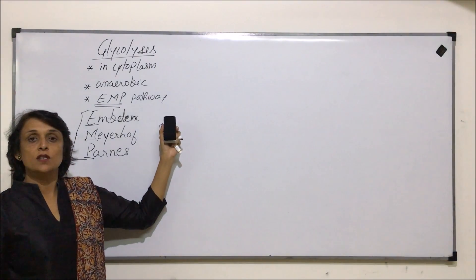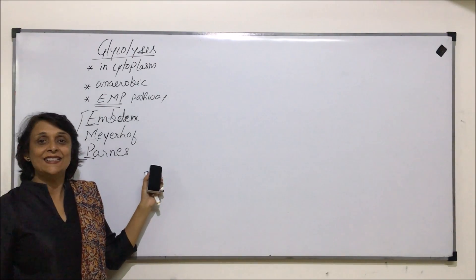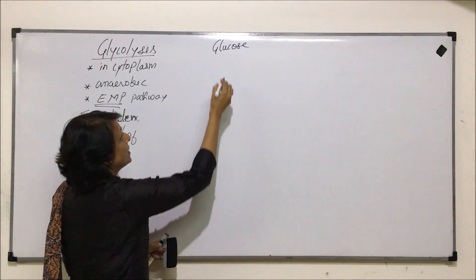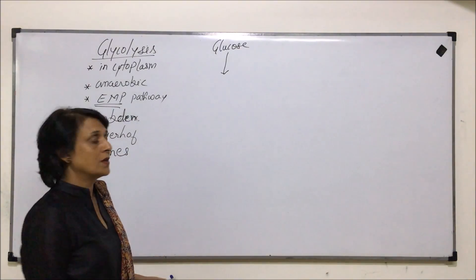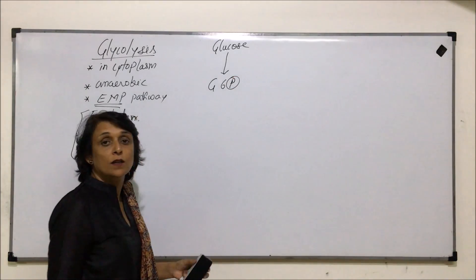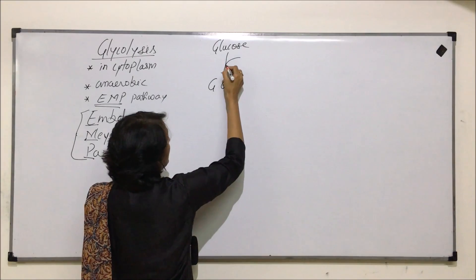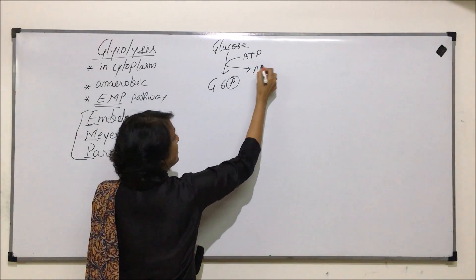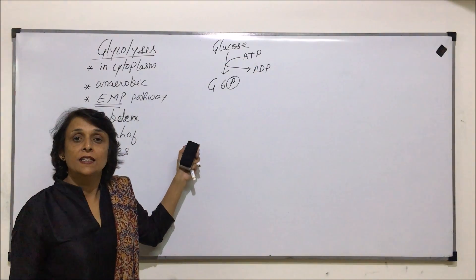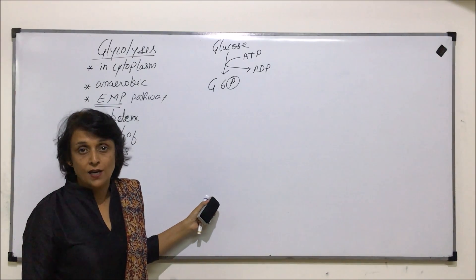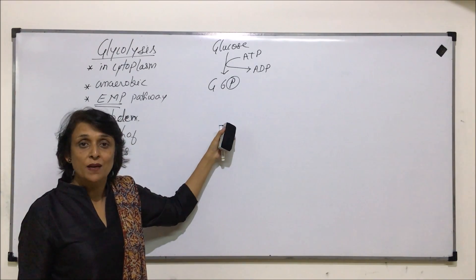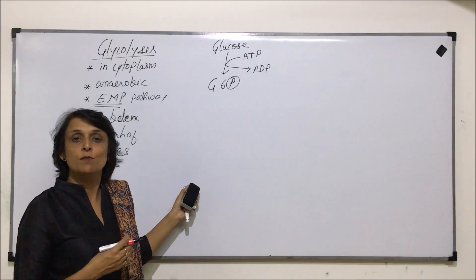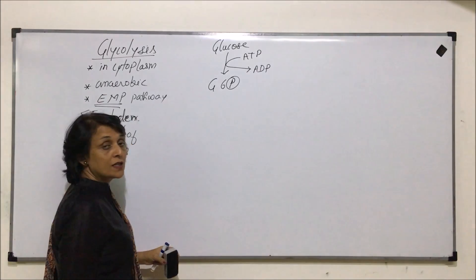In glycolysis, glucose is broken down into pyruvic acid. We will talk about all ten steps in which this reaction takes place. It starts with glucose being converted into glucose-6-phosphate, where a phosphate group is added. ATP is required, providing energy as well as the phosphate, and it changes into ADP. The first half of glycolysis is the energy investment phase, where energy is being used up.